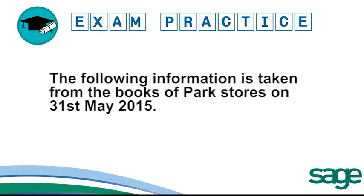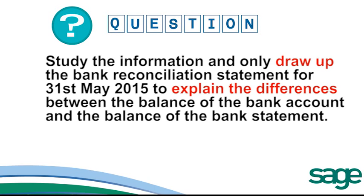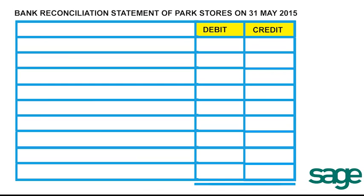Now let's practice what we've learnt with this example. The following information is taken from the books of Park Stores on 31 May 2015. Study the information and draw up the bank reconciliation statement for 31 May 2015 to explain the differences between the balance of the bank account and the bank statement.